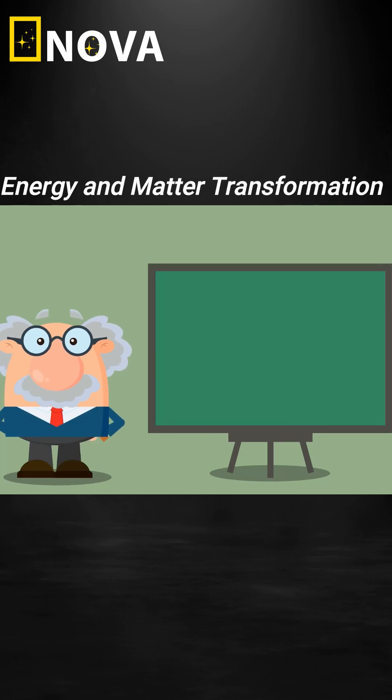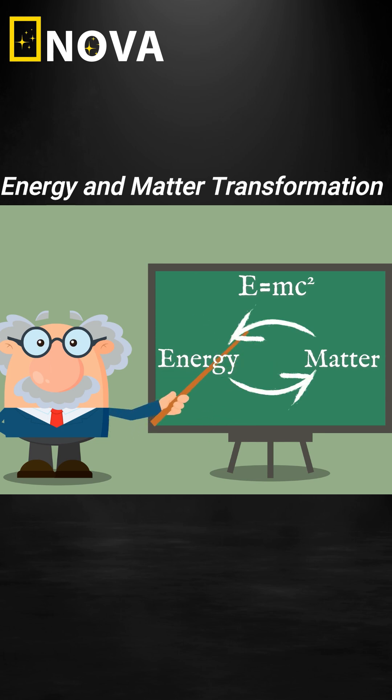According to Einstein's famous equation, E equals mc squared, energy and matter are interchangeable. Energy can transform into matter, and matter can become energy. Let's break it down.